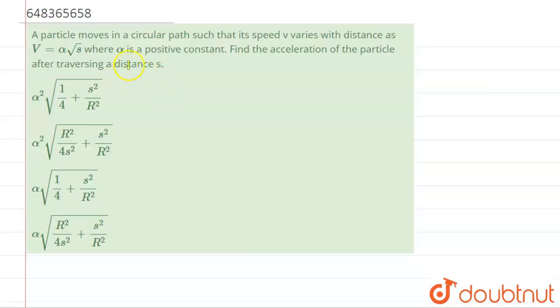Hello students, now we're going to see this question. The question says that a particle moves in a circular path such that its speed v varies with distance. So v equals alpha times root s, where alpha is a positive constant. Find the acceleration of the particle after traversing a distance s.